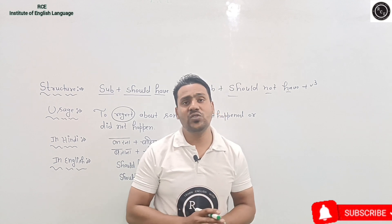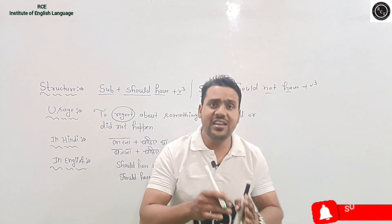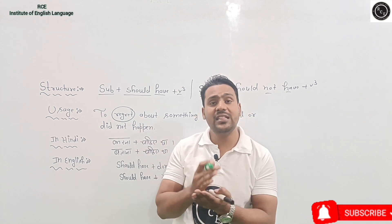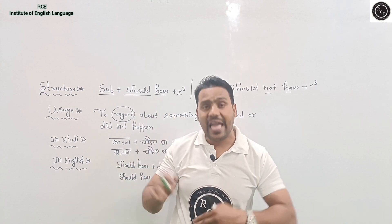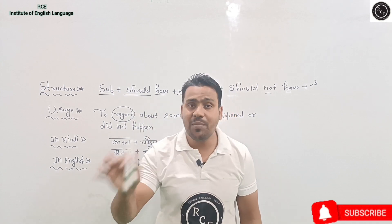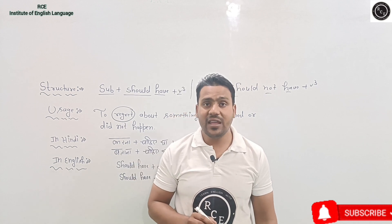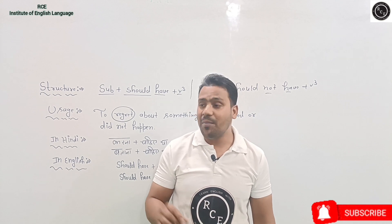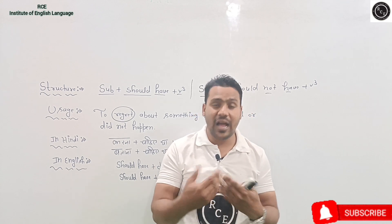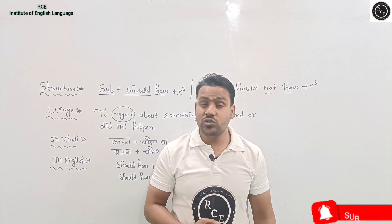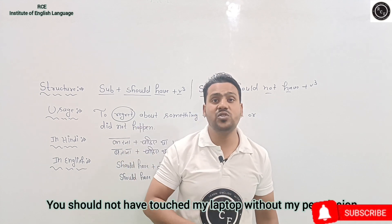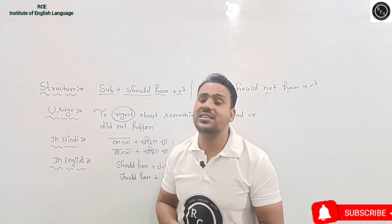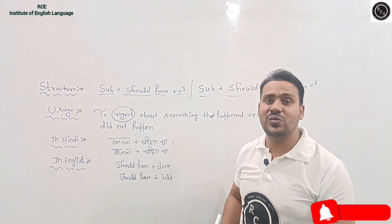When such situations arise — jab afsos ki koi baat hoti hai — we use this structure. We can also use it when giving advice or showing anger about past actions. For example, if someone broke your pen, you say: you should not have touched my pen. Or if someone used your laptop without permission, you say: you should not have touched my laptop without my permission.